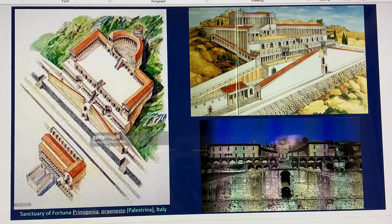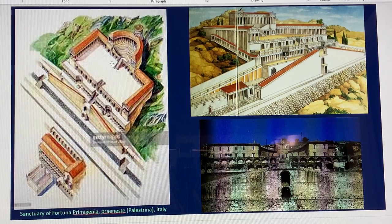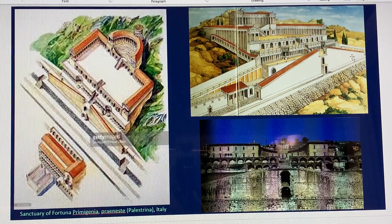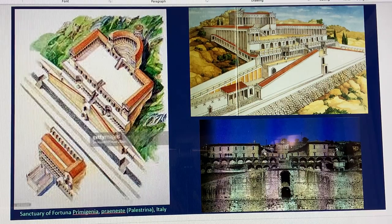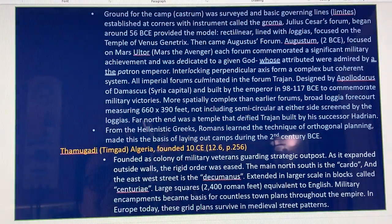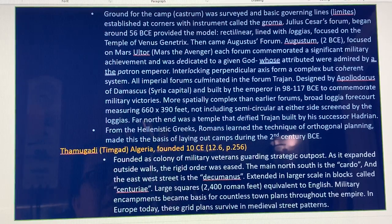This is the Sanctuary of Fortuna Primigenia, Italy. You can see the top of the rock with the terraced yard, with many levels going up. From the front view you can see the long sloping section with many levels rising. The route from the military camp was surveyed by the basic governing line established at the corners, using an instrument called the groma.